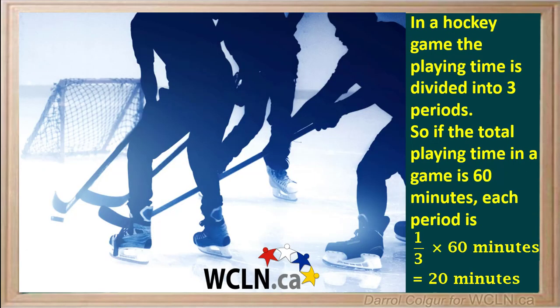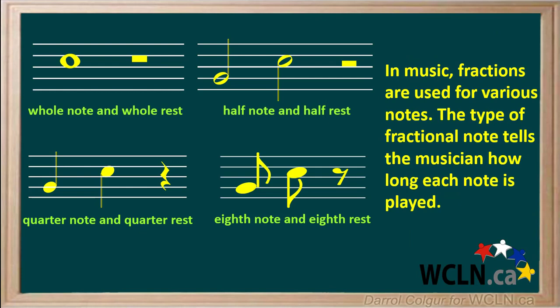In a hockey game, the total time the puck is in play is divided into three periods. So if the total playing time is 60 minutes, each period takes one-third times 60, or 20 minutes. In the event of a tie, after the third period, an overtime period can be added.